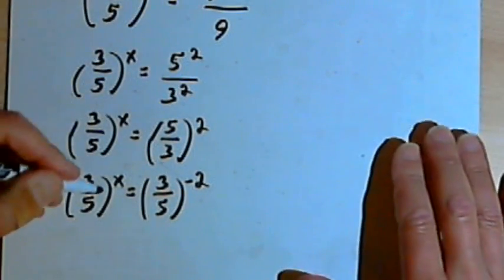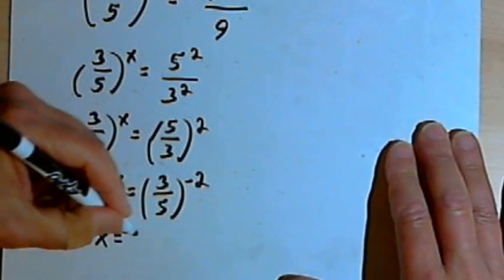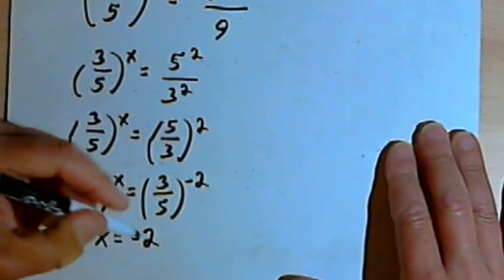And now the bases are the same, so the exponents must be equal to each other. So I've got x equals negative 2.